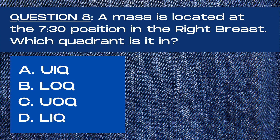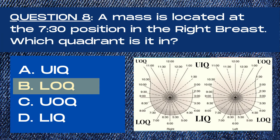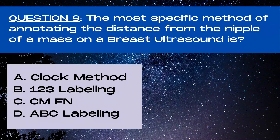Question 8. A mass is located at the 7:30 position in the right breast. Which quadrant is it in? A upper inner quadrant, B lower outer quadrant, C upper outer quadrant, or D lower inner quadrant? The answer is B, lower outer quadrant. In the right breast, the lower outer quadrant consists of clock positions between 6 o'clock and 9 o'clock, with 7:30 being right in that segment.